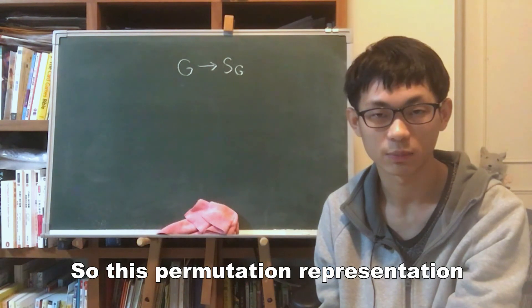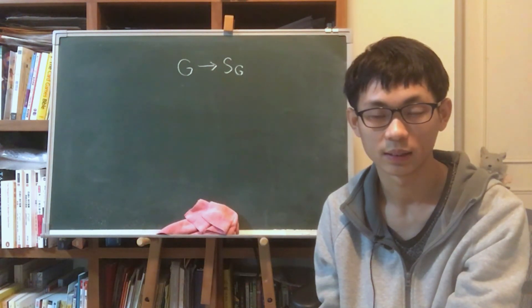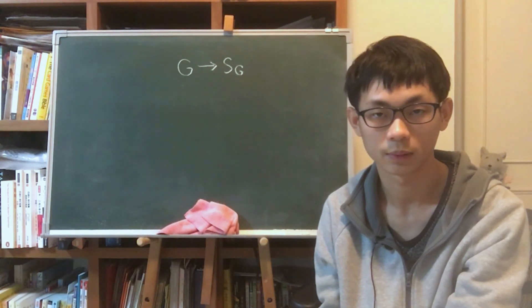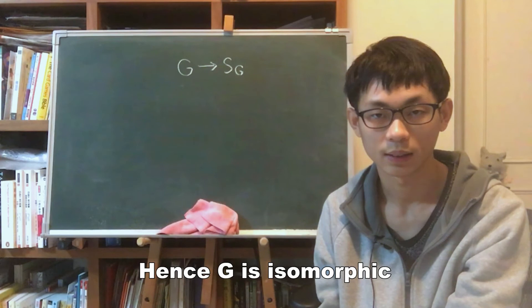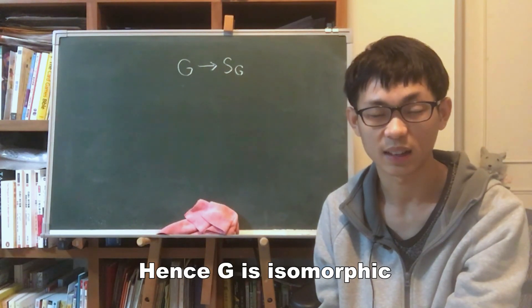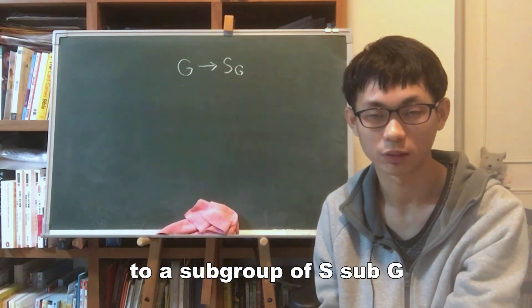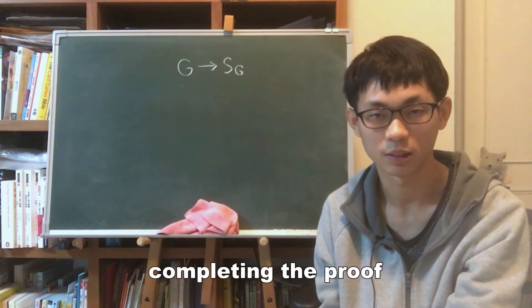So this permutation representation is injective. Hence, G is isomorphic to a subgroup of S_G, completing the proof.